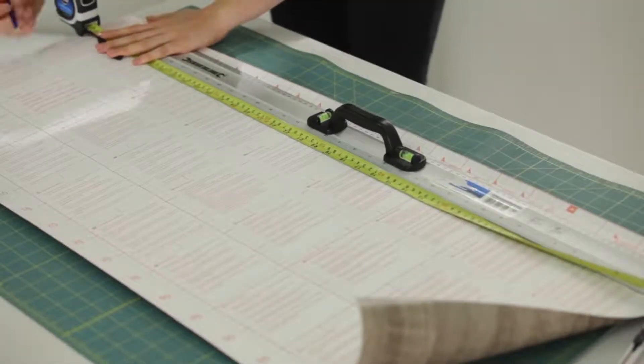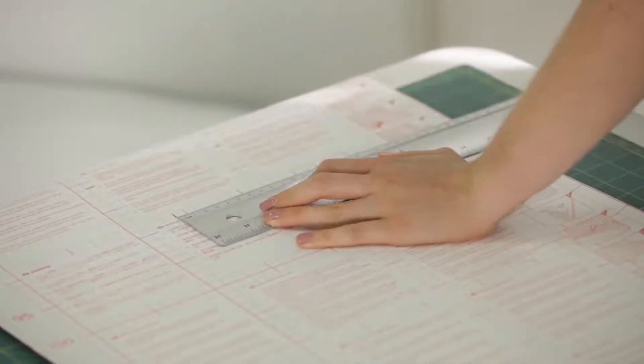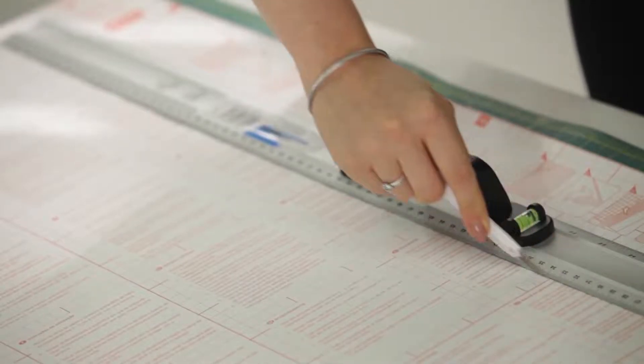On the back of this sticky back plastic there are actually grid markings, so they're in centimeter squares, a bit like a math book that you'd have at school. If you haven't got a tape measure handy, you can always use that as a guide.